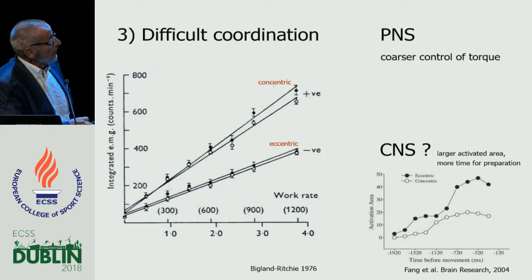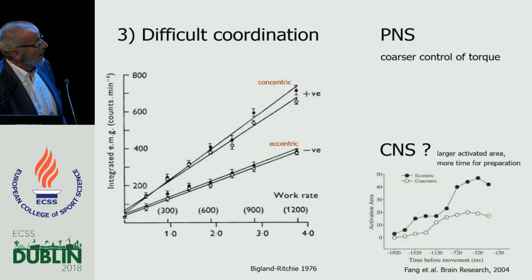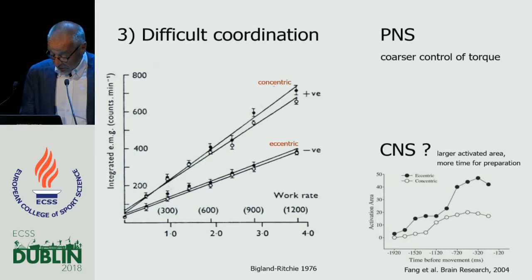There is also a difference at the central nervous system level. About 20 reviewed papers discuss this, and there are data indicating that eccentric exercise uses a larger area of the brain when you activate eccentric motions. You also need more time to prepare — there is more central nervous system time required to prepare an eccentric contraction — but there is certainly a lot of room there to improve.